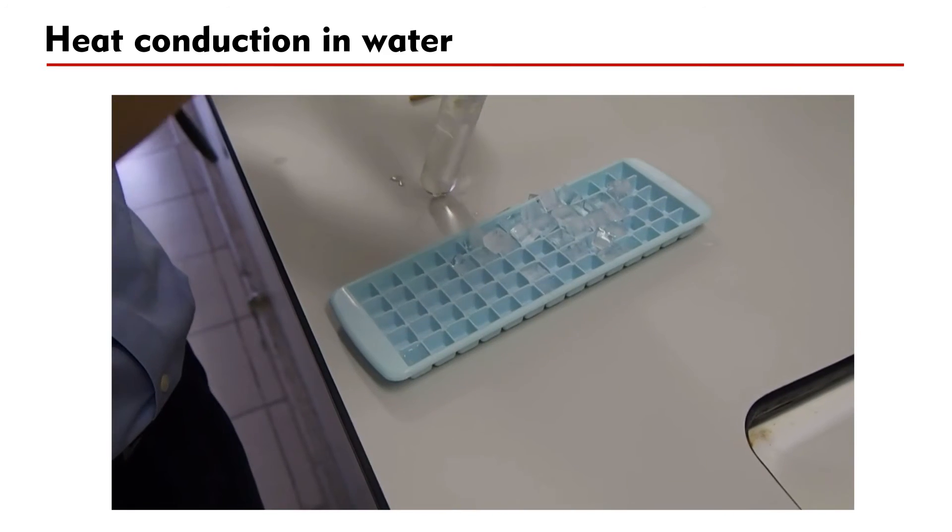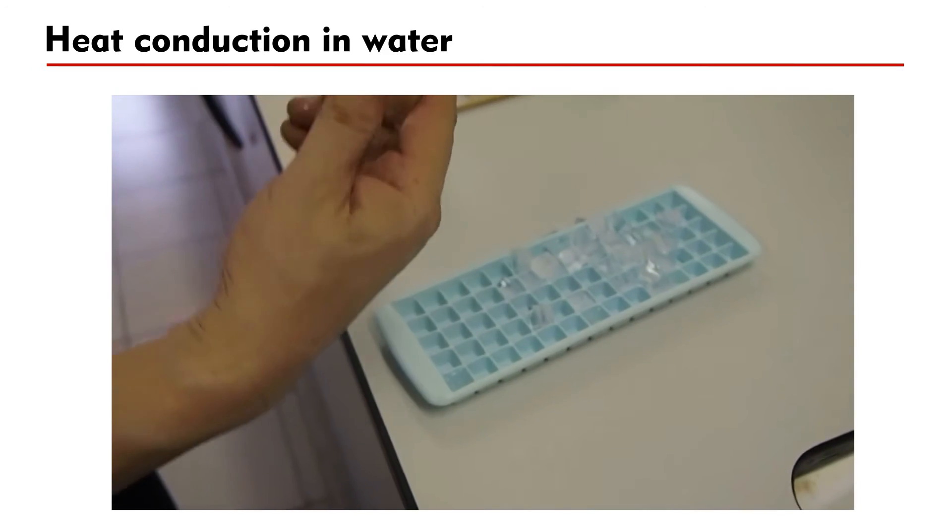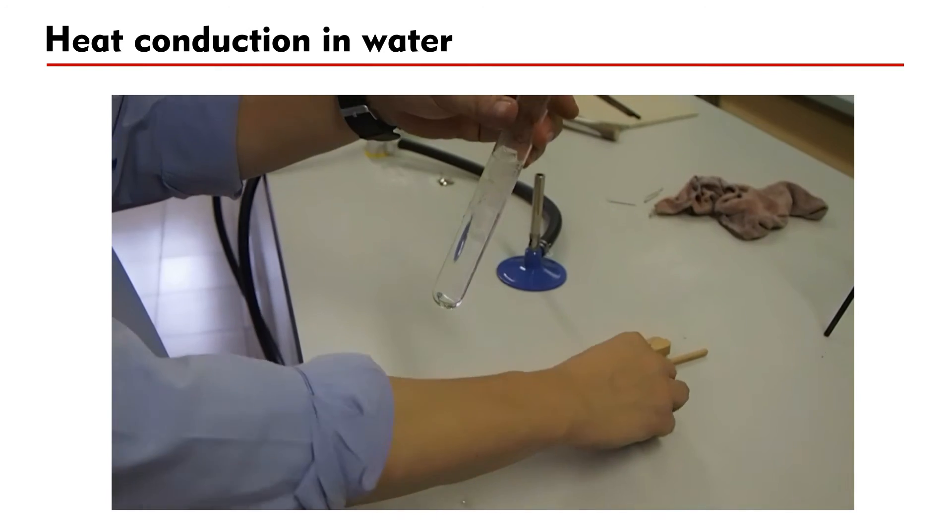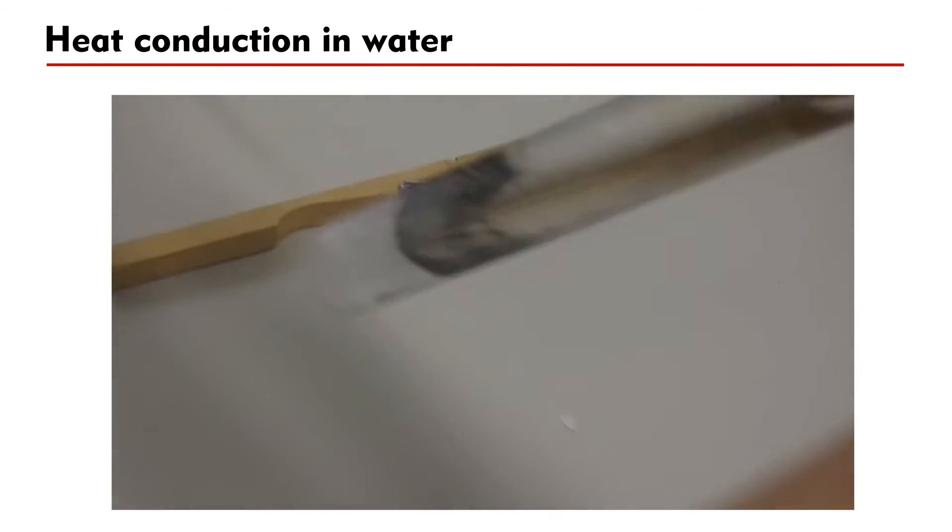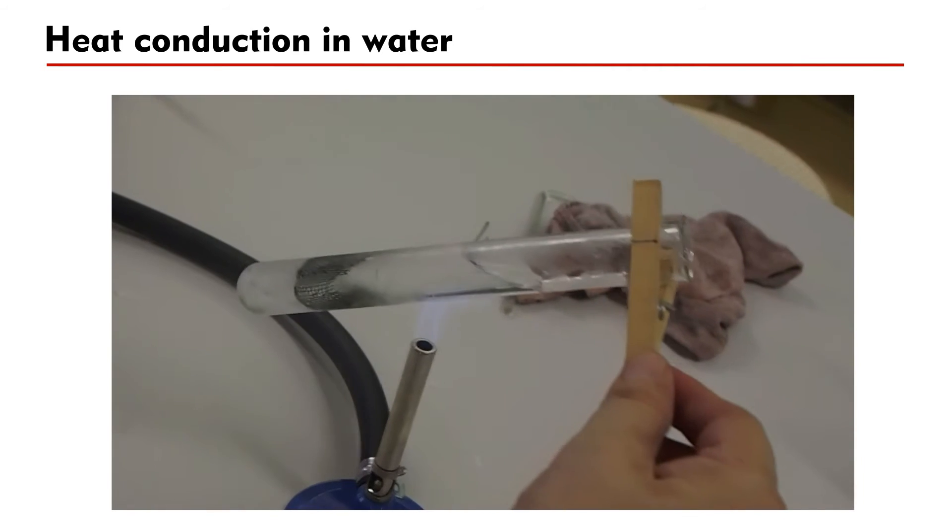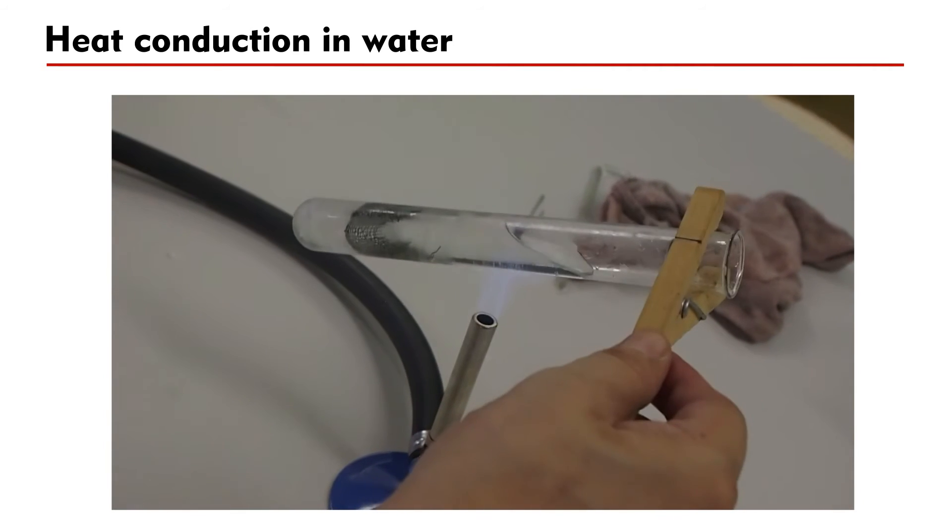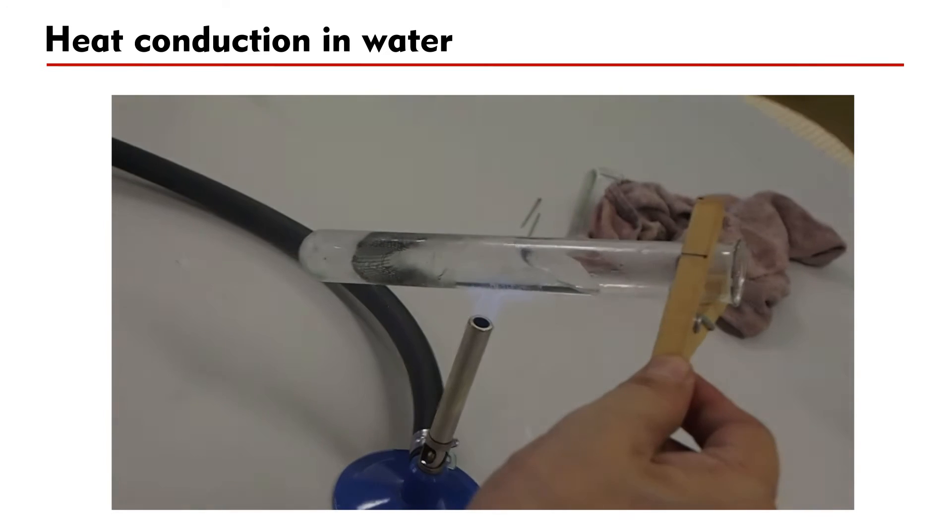Now, let's consider the heat conduction in water. Put ice and water into a boiling tube. The ice floats near the water surface. A wire gauze is used in order to keep the ice at the bottom of the boiling tube. Now, heat the boiling tube by a Bunsen burner with the flame near the water surface.